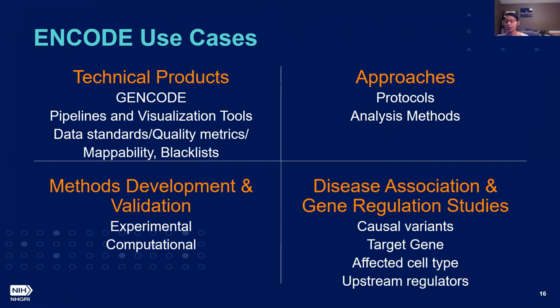And then we have this last category related to disease association and gene regulation studies. ENCODE is providing information on genes and regulatory elements that can be overlaid or used in conjunction with other studies to identify causal variants or enable you to learn more about the mechanism of your target gene of interest. Basically, the scientific community continues to utilize ENCODE data in new and innovative ways to better understand the human genome and its role in health and disease.